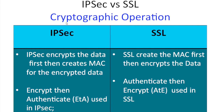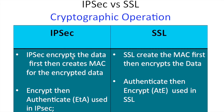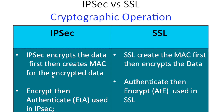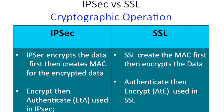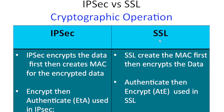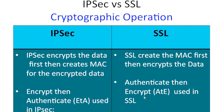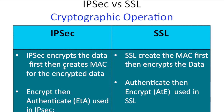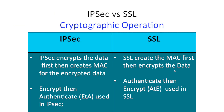For cryptographic operations, IPSec first encrypts then authenticates — it encrypts the data first and then creates a MAC for the encrypted data. SSL does the opposite: it authenticates first, creating the MAC first, and then encrypts the data.